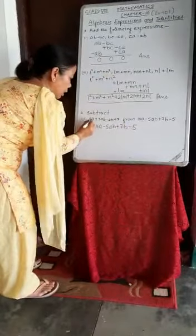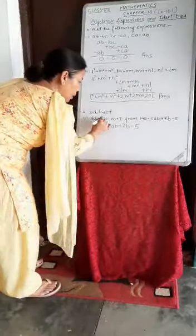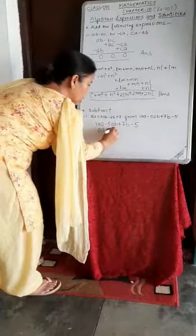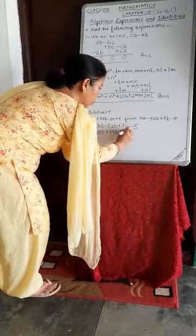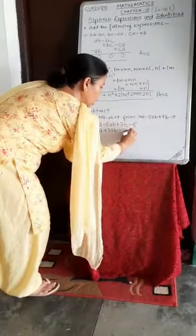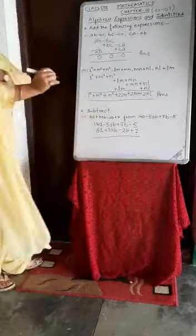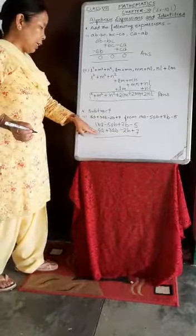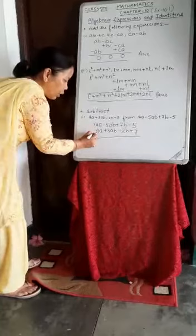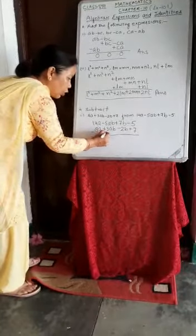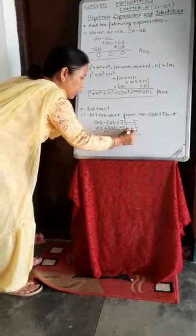8A is a like term to 14A, so it will be written below as 8A. Plus 3AB will come below 5AB, minus 2B will come below 7B, and plus 7 will come below minus 5. Draw the line. In subtraction, remember we have to change the sign of the term being subtracted: plus becomes minus, and minus becomes plus.